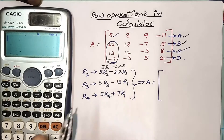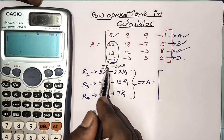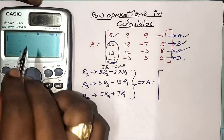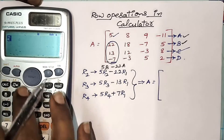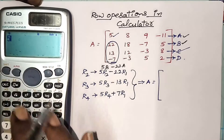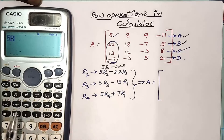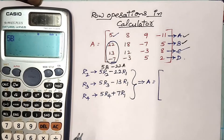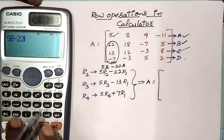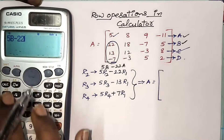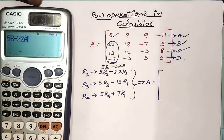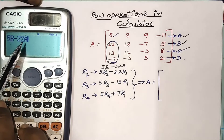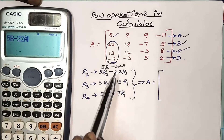We should operate 5B minus 22A in our calculator. Press 5, then Alpha B (for pink color you should press Alpha first), minus 22, then Alpha A. So 5B minus 22A is our row operation. After that, press the calculate button.